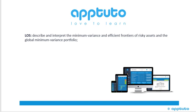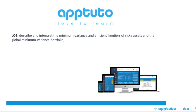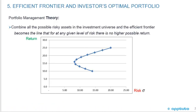This LOS is: Describe and Interpret the Minimum Variance and Efficient Frontiers of Risky Assets and the Global Minimum Variance Portfolio. Efficient Frontier and Investors' Optimal Portfolio. Remember, this is Portfolio Management Theory.